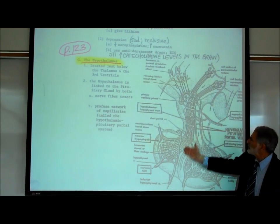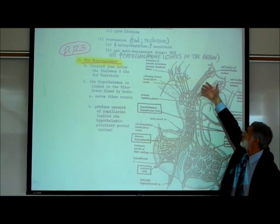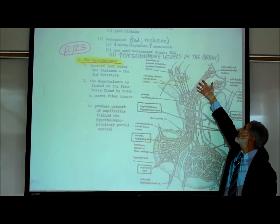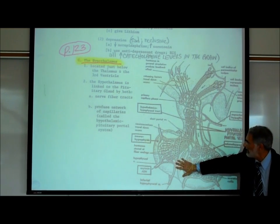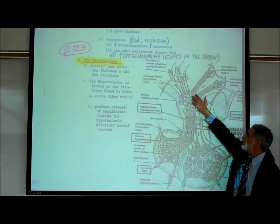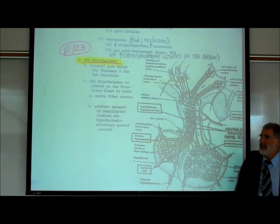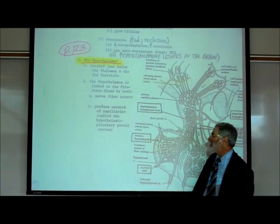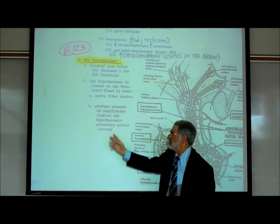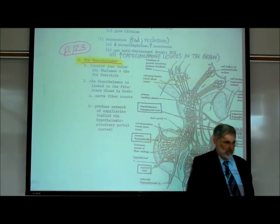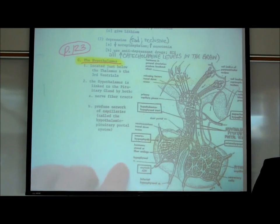There are a bunch of nerve fibers going between the hypothalamus and the pituitary gland. There's also a bunch of blood vessels collectively known as the hypothalamic pituitary portal system that we'll be talking about.